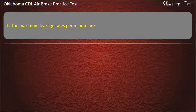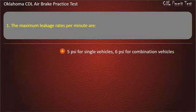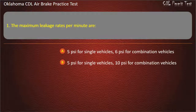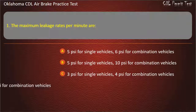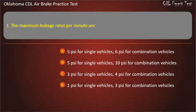Question 1. The maximum leakage rates per minute are: 5 pounds per square inch for single vehicles, 6 pounds per square inch for combination vehicles; 5 pounds per square inch for single vehicles, 10 pounds per square inch for combination vehicles; 3 pounds per square inch for single vehicles, 4 pounds per square inch for combination vehicles; or 1 pound per square inch for single vehicles, 3 pounds per square inch for combination vehicles. Answer: 3 pounds per square inch for single vehicles, 4 pounds per square inch for combination vehicles.